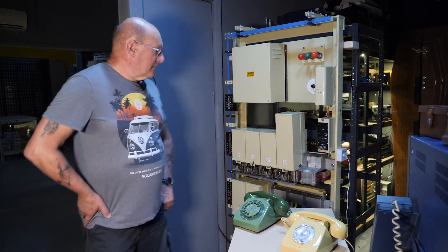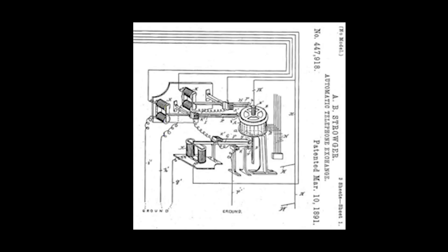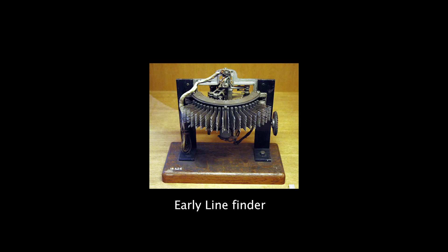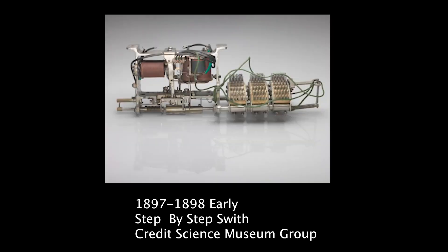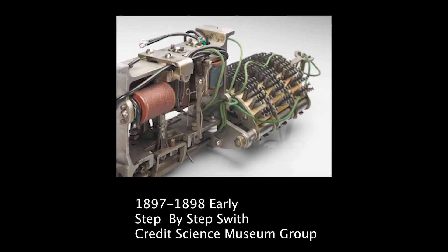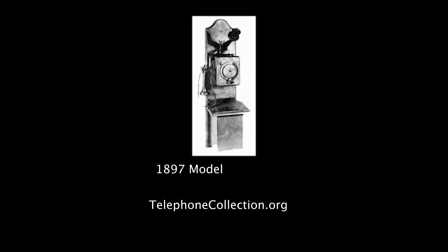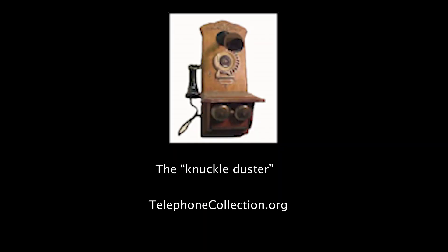What he managed to come up with was a system of switches. One was fixed at the telephone end that the caller could tap and send pulses down the line, and another one in the exchange that would operate to these pulses and connect the line through to Mr Jones the butcher. So he didn't need the operator anymore. Over the years, Strelger also managed to invent the telephone dial, so that made life even easier.